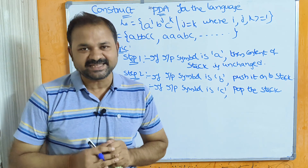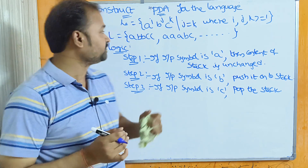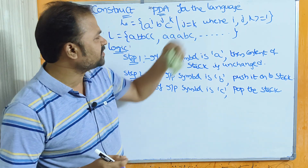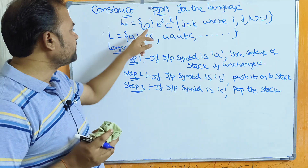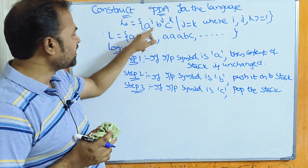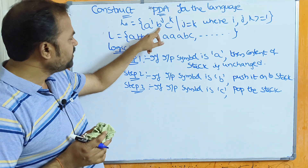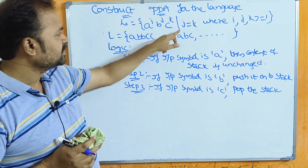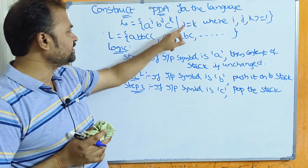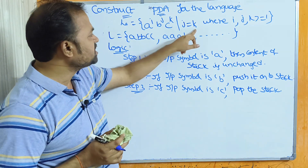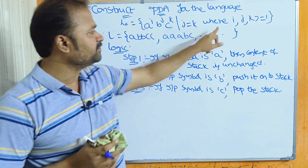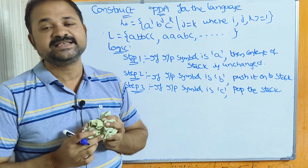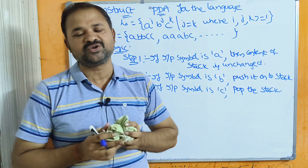Let's see this example. Construct a PDA for the language L = {a^i b^j c^k} such that j equals k, where i, j, k are greater than or equal to 1.